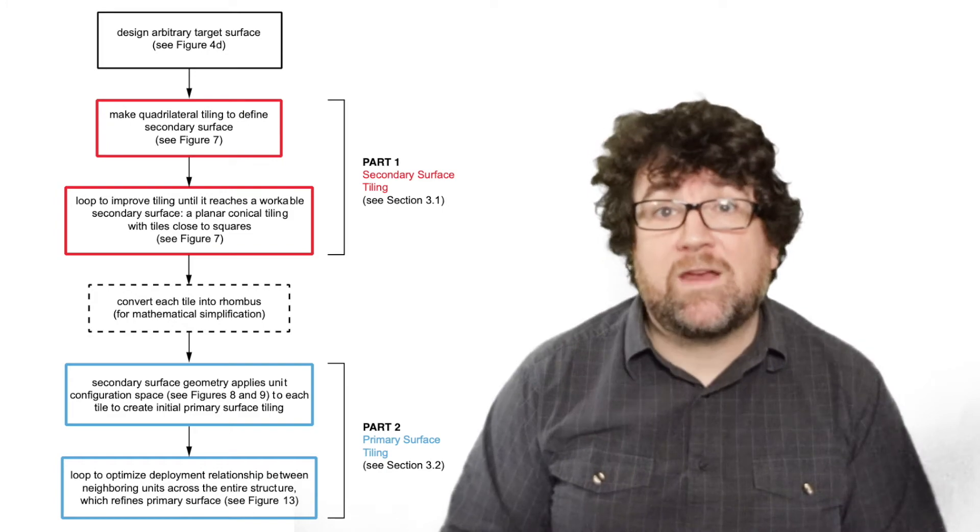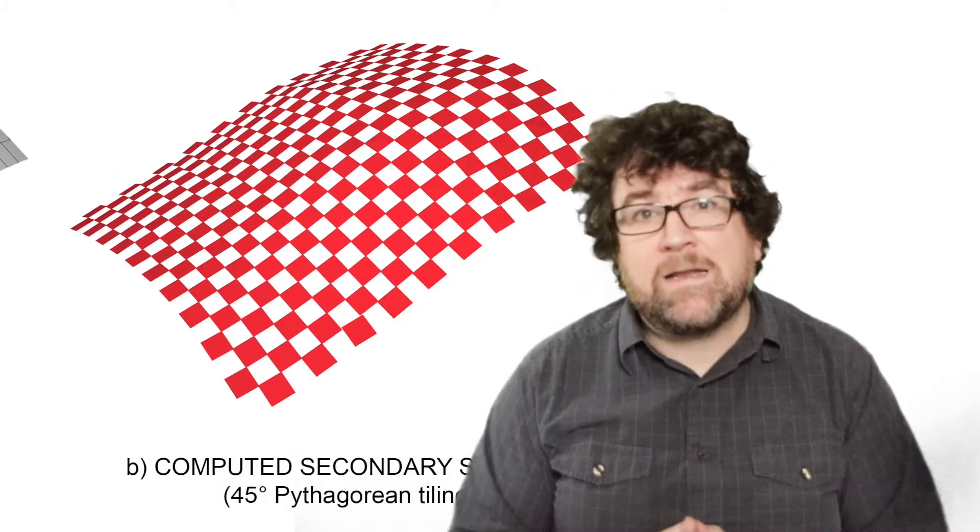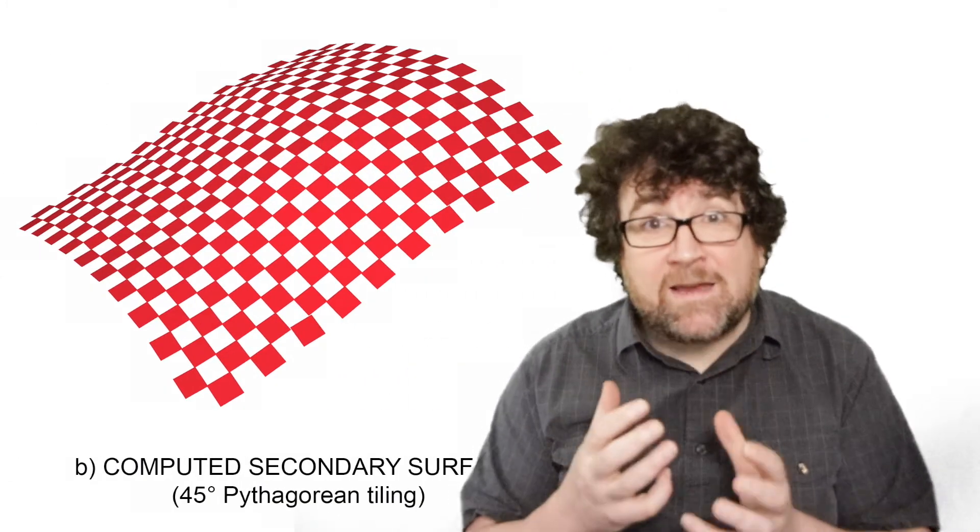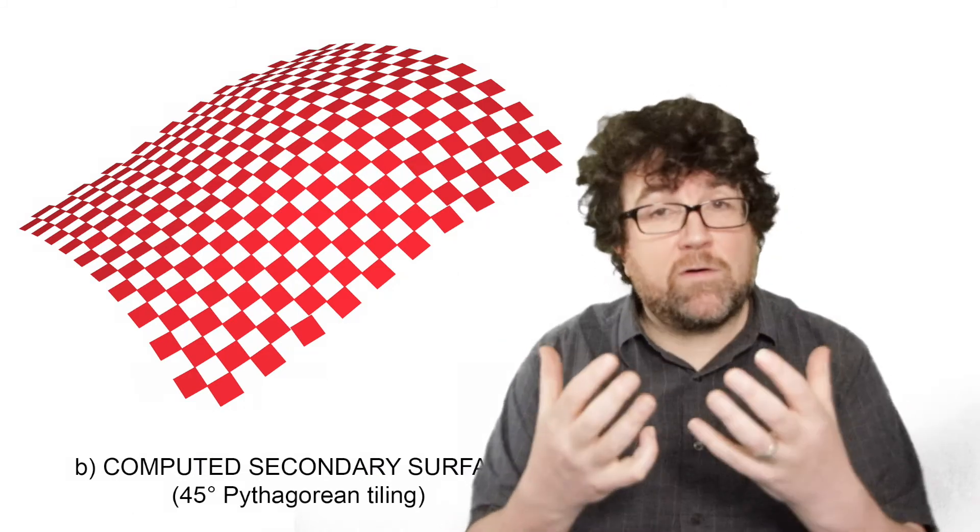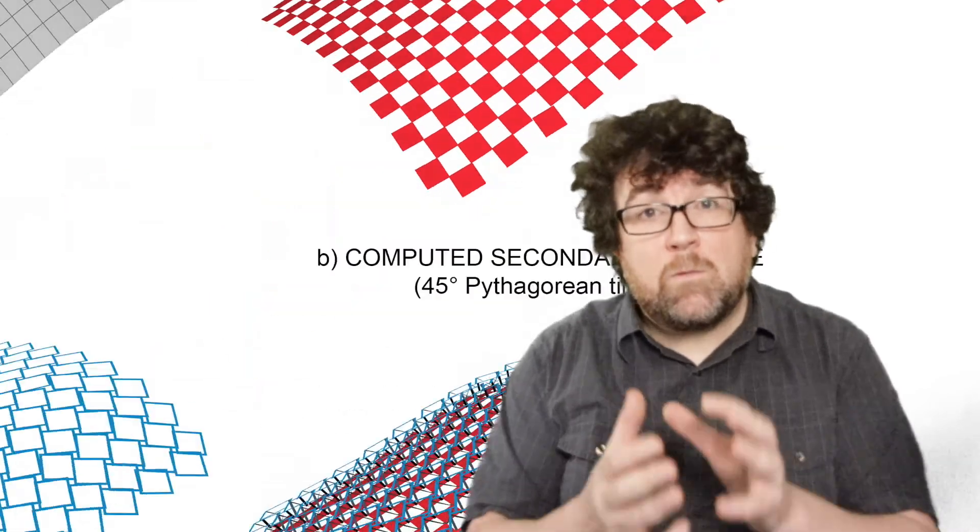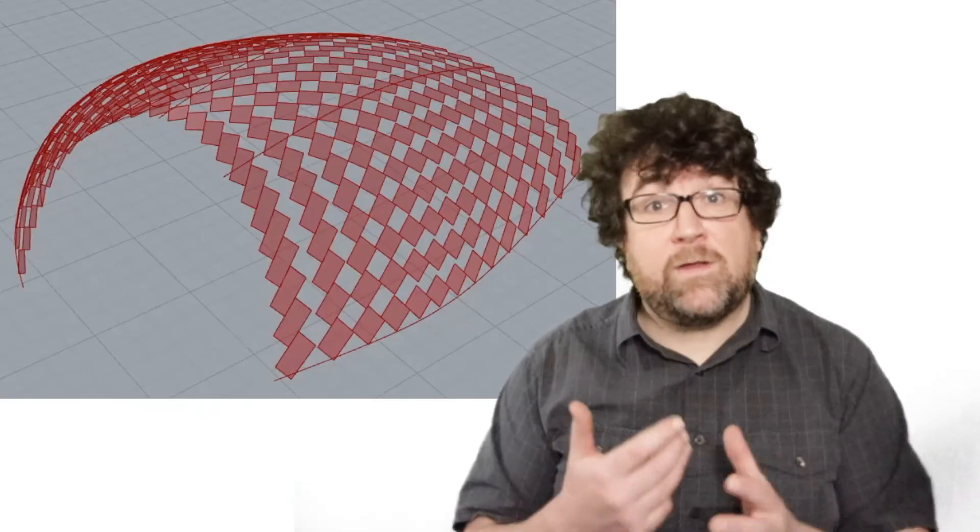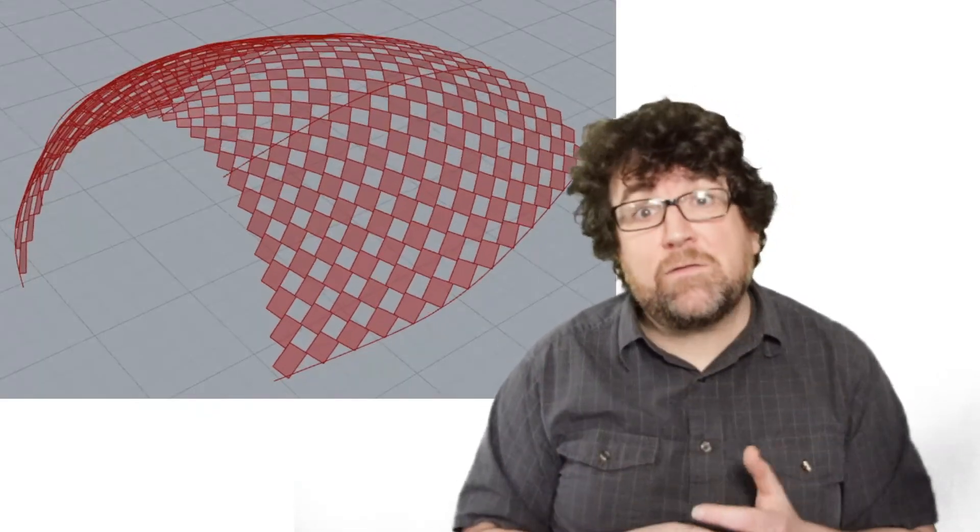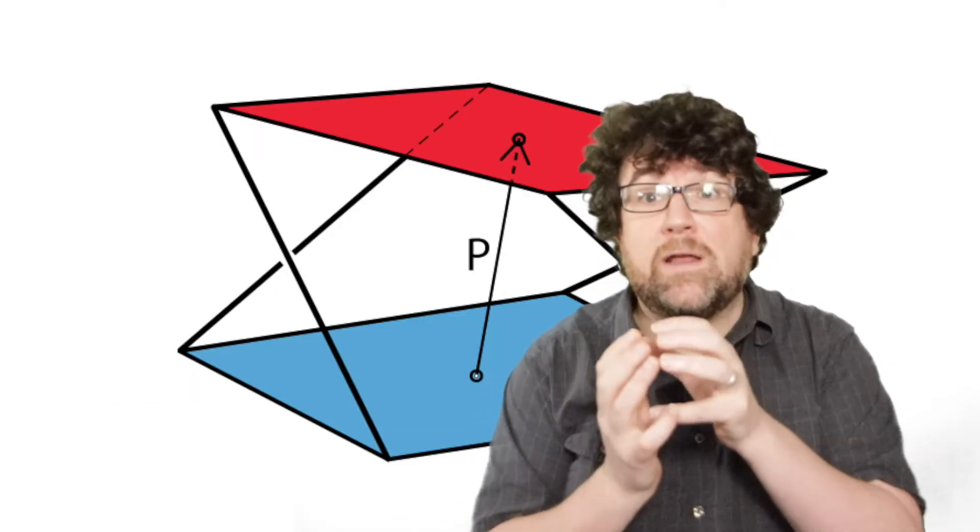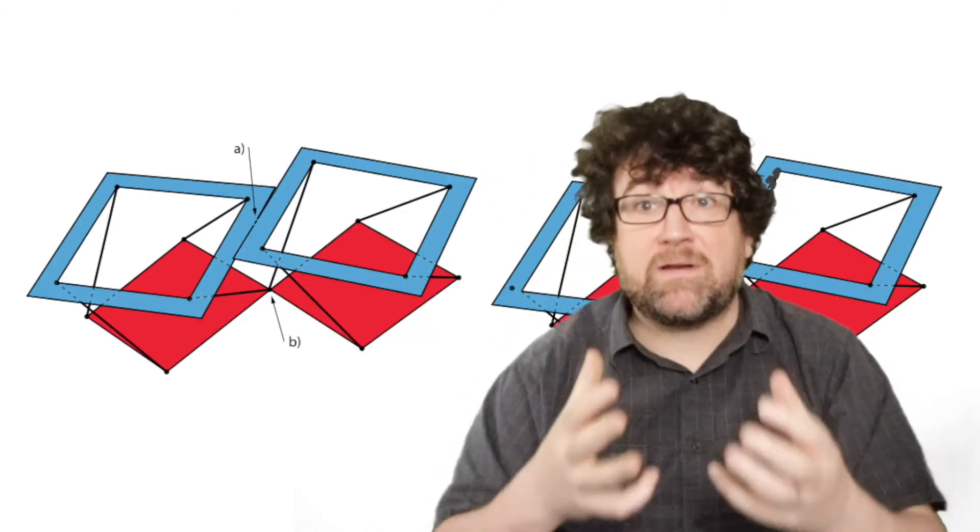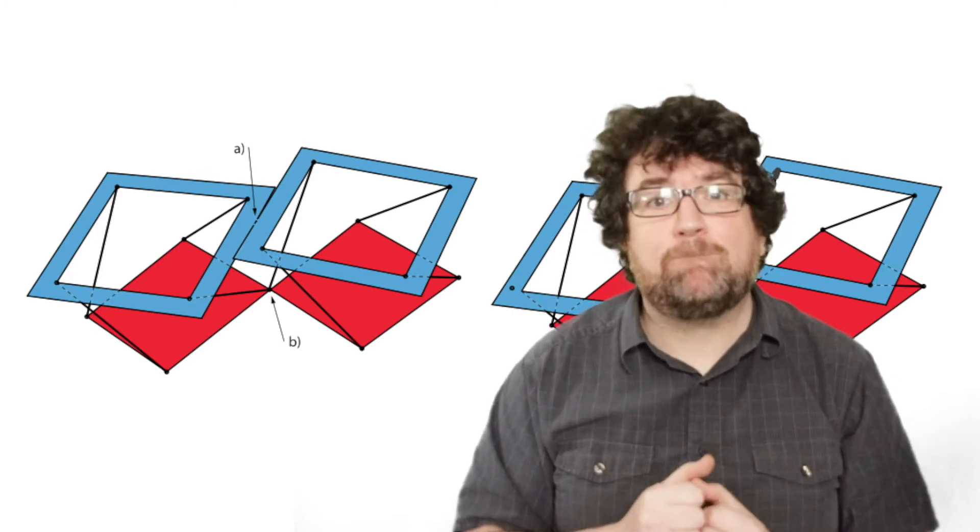In order to achieve this, we set up a two stage process. Starting from an input surface, we first find a good tiling of this surface that will work for the secondary surface, that is the more constrained of the two. Then from the secondary surface, which approximates our target surface, we deploy the units back to create an optimal primary surface. In order to do this, we had to identify a good candidate for the secondary surface, solve the geometry of the individual units, and finally do an optimization to create the fully optimized units. Michael will describe this process in more detail.